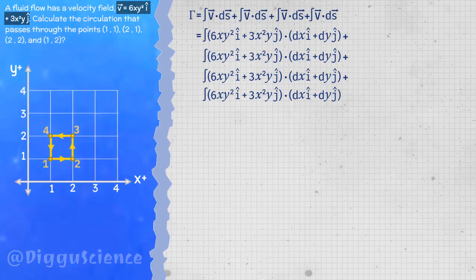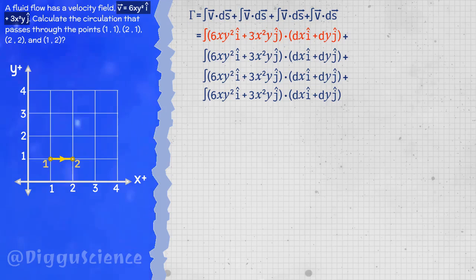We will do the integration process four times. The first is from point one to point two. The line formed is a horizontal line. The ordinate value at each point on the line is the same, which is one. This means that there is no change in the y-axis, the dy factor is none.